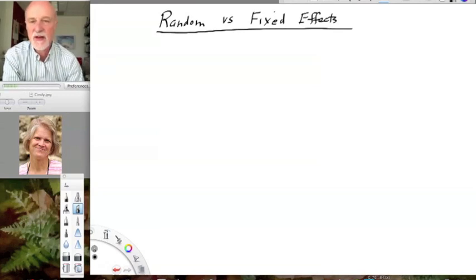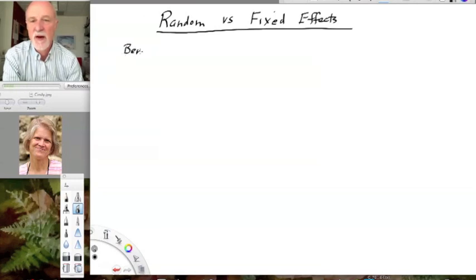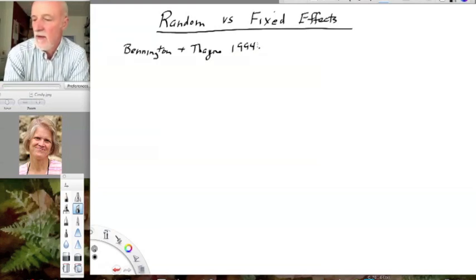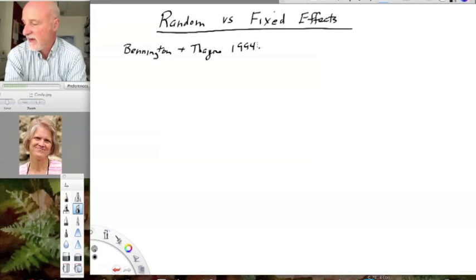This is Cindy Bennington who is now a professor at Stetson University in Florida. And in an article by Bennington and Fain, written I believe in 1994, Cindy and a statistics professor here reviewed some of the ecological literature about the use that ecologists were making of random and fixed effects and found that there were actually a low percentage of studies where you could tell whether they were designating factors as random or fixed effects.